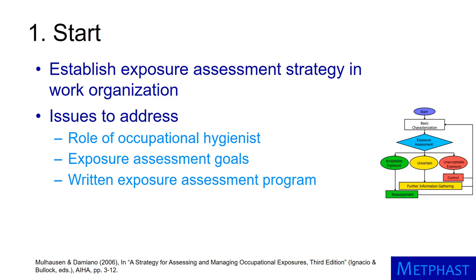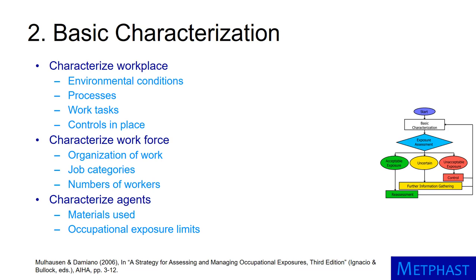The organization's exposure assessment program should be written down and shared with all stakeholders. This document should indicate the specific methods and criteria that the organization will use. The next step, basic characterization, involves gathering information about the workplace, the workforce, and the agents that may be present in the work environment. When characterizing the workplace, an occupational hygienist will ask: what are the environmental conditions? Is it indoors or outdoors? What are the temperature and relative humidity? The hygienist will also seek to understand the processes and operations in the workplace and whether control measures are already present.